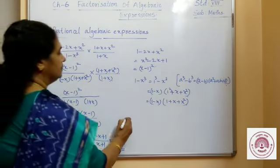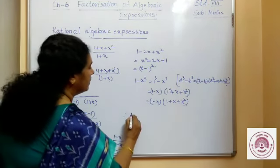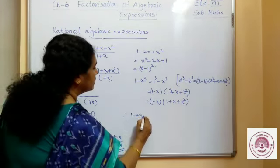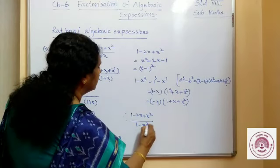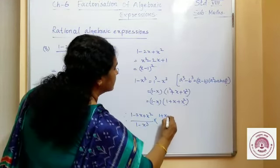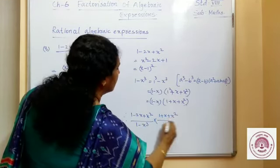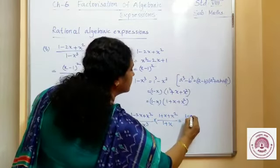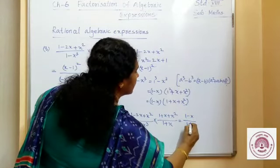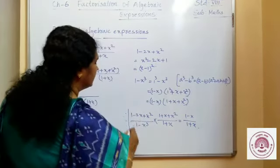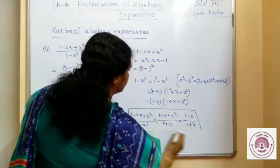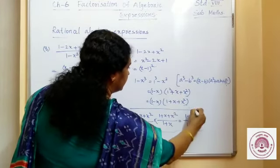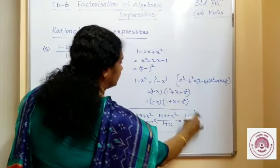Therefore, (1 - 2x + x²) upon (1 - x³) into (1 + x + x²) upon (1 + x) is equal to (1 - x) upon (1 + x). So, this is the answer. Thank you.